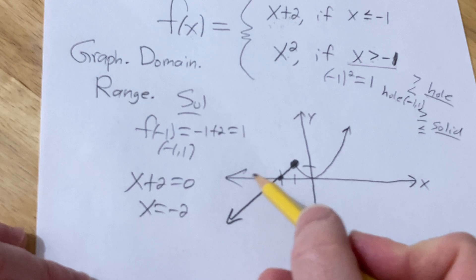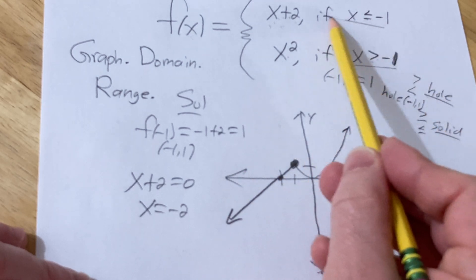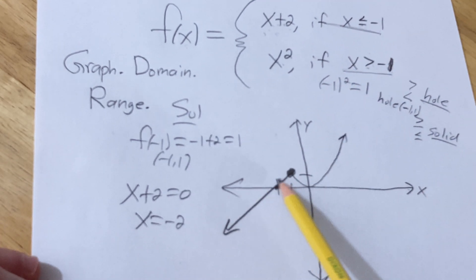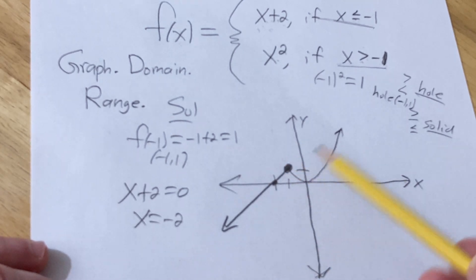We know to draw it this way because it's for x-values less than or equal to negative 1, that's why it doesn't go up like this. Also, if it went up like this, it wouldn't even be a function, it would fail the vertical line test.